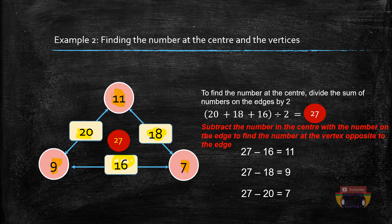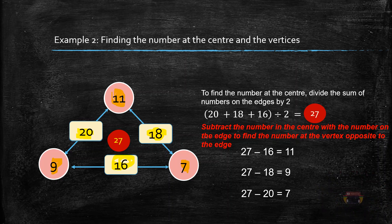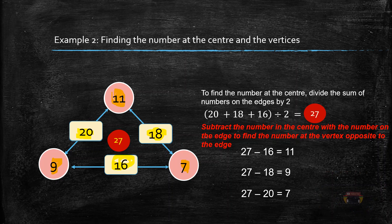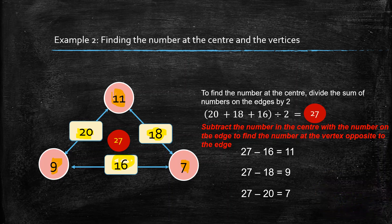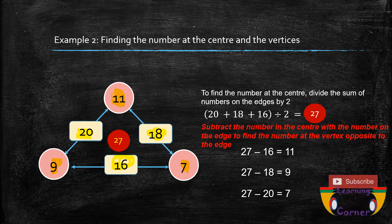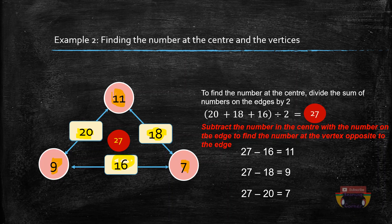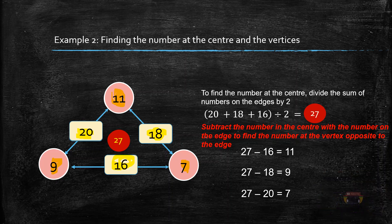So 27 minus 16 is 11, placed at the vertex opposite that edge. 27 minus 18 is 9, placed at the opposite side. 27 minus 20 is 7, placed at the opposite side. To summarize: to find the numbers at the vertices, first add the numbers on the edges and divide by 2 to get the center number, then subtract the edge number from the center number and write the answer at the opposite vertex.